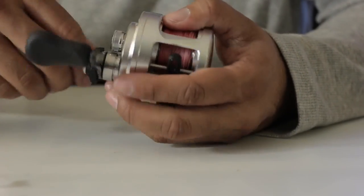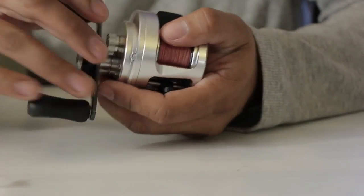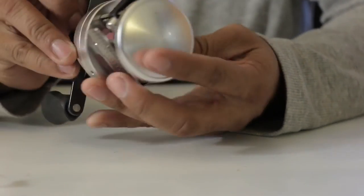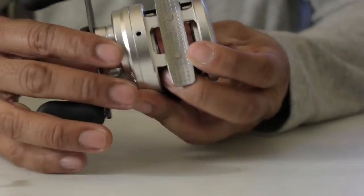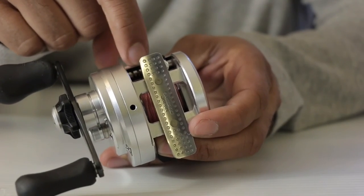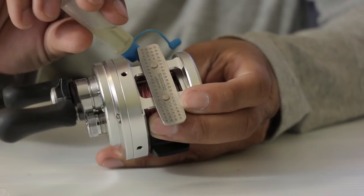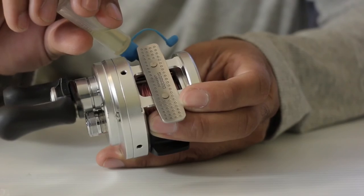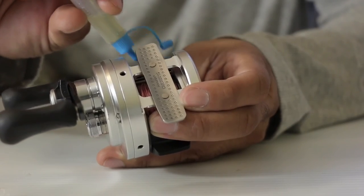Spin it, make sure it's fine. Thumb works. Also, you want to put maybe two drops of oil onto this level wind system inside. Keep that, after you clean it, you want to keep maybe two, maybe three drops. Not too much.